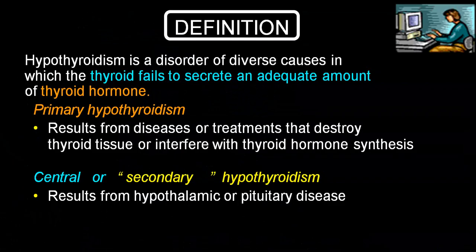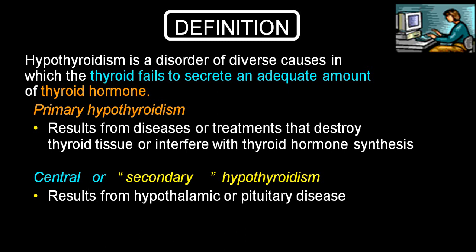By definition, hypothyroidism is a disorder in which the thyroid gland fails to secrete an adequate amount of thyroid hormone. When the thyroid gland itself fails, we call it primary hypothyroidism. When a problem in the pituitary or hypothalamus results in decreased thyroid function, we call it central hypothyroidism or secondary hypothyroidism.